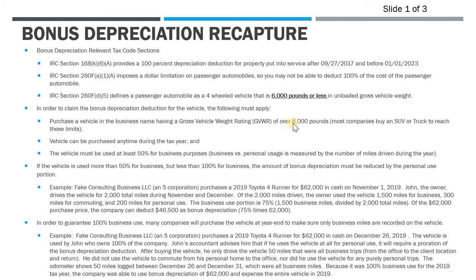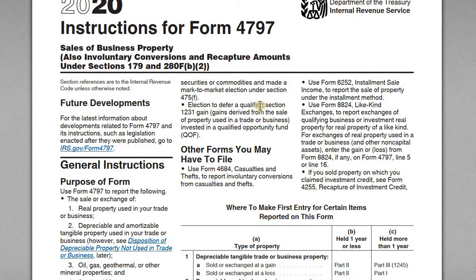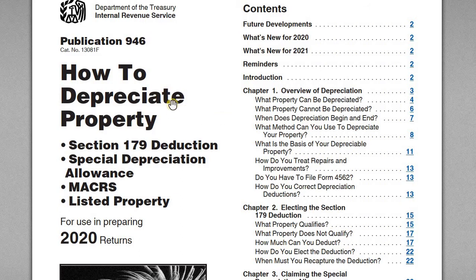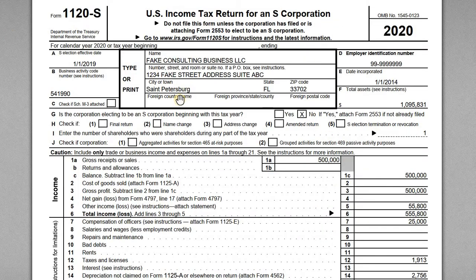Most of the time when we think about recapture for depreciation expense, it's because we actually sell the asset. In this case, that's not what's happening — we still have the vehicle, but our business use percentage fell below 50%. Now that it's predominantly a personal use vehicle, federal tax rules require you to recapture what is considered excess depreciation expense. I've got a few slides, a sample S-corp return, instructions for Form 4797, and publications 946 and 463 as reference materials.